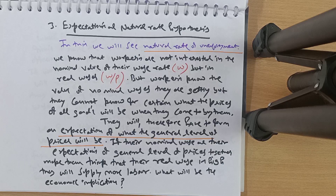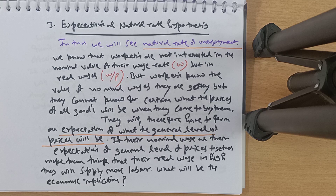The third example is expectations and the natural rate of unemployment — recalling the Blanchard Chapter 6 determination of the NRU using wage setting and price setting, where expectations also played a role. Workers are not interested in the nominal value of their wages but in real wages. Workers know their nominal wages but cannot know for certain what prices of goods will be when they come to buy them.